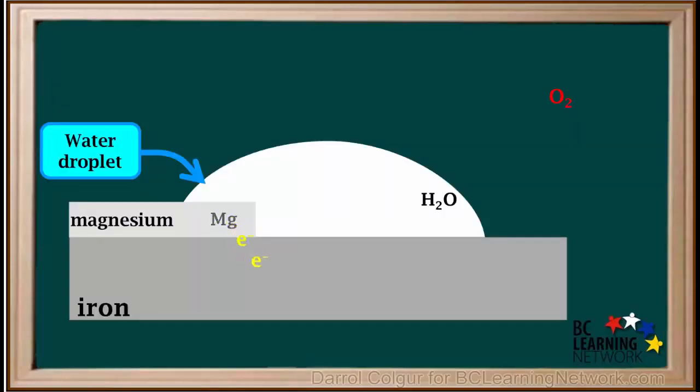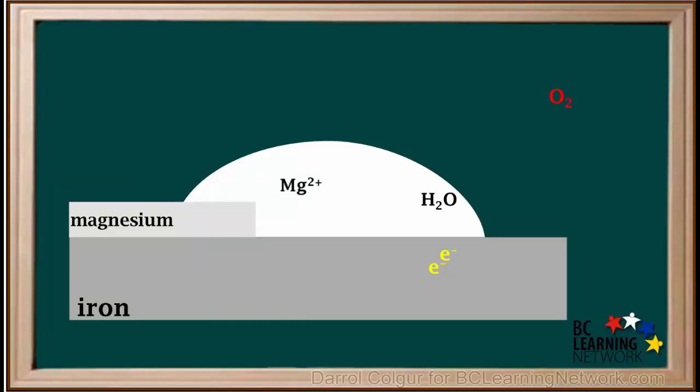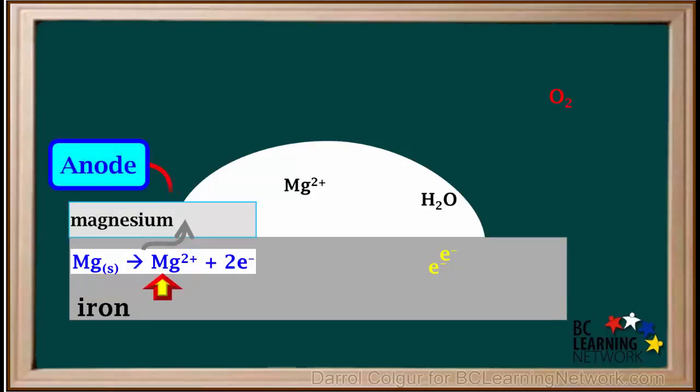A magnesium atom will lose 2 electrons as it oxidizes to an Mg2+ ion. These electrons flow onto the iron. The magnesium ion will leave the metal and dissolve in the water. This oxidation half reaction taking place on the magnesium is Mg solid gives Mg2+ plus 2 electrons. Because oxidation of magnesium occurs instead of iron, magnesium is now the anode instead of the iron.